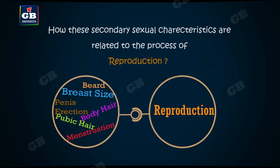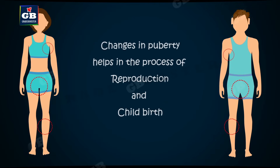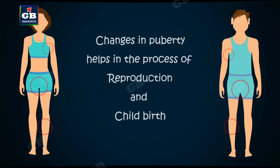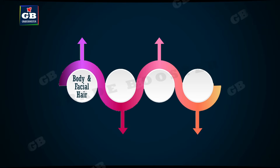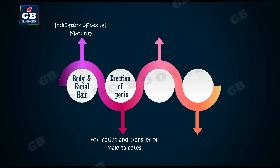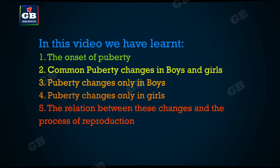Changes during puberty are linked to the reproductive process. Body and facial hair are signals of sexual maturity. Erection of the penis helps in the deposition of germ cells in the female reproductive system. The menstrual cycle indicates ovulation and the condition of the uterus. Enlargement of the breast is for breastfeeding of the baby.